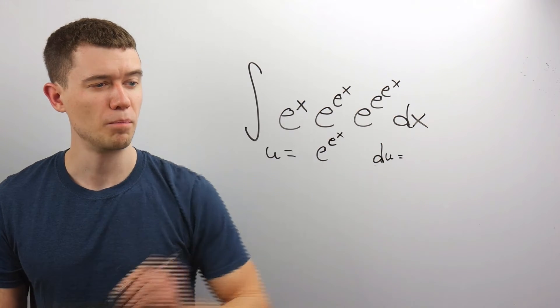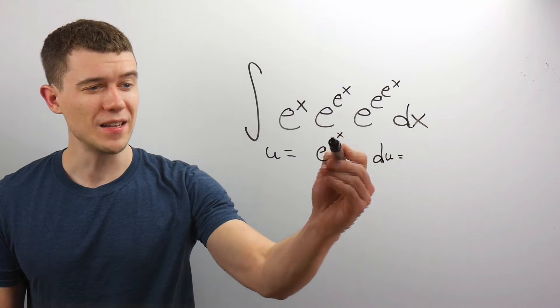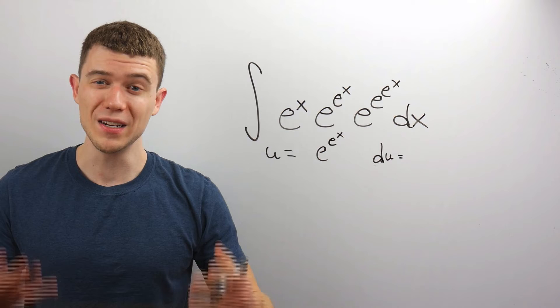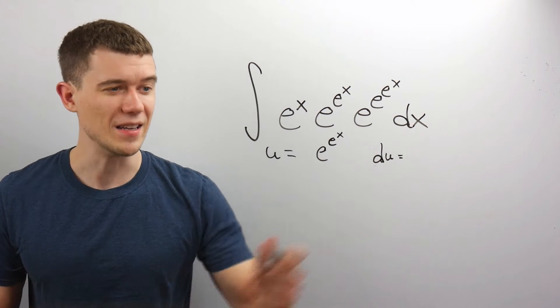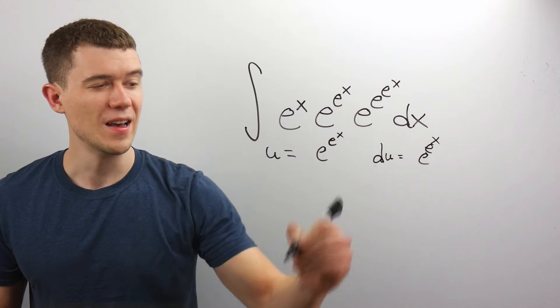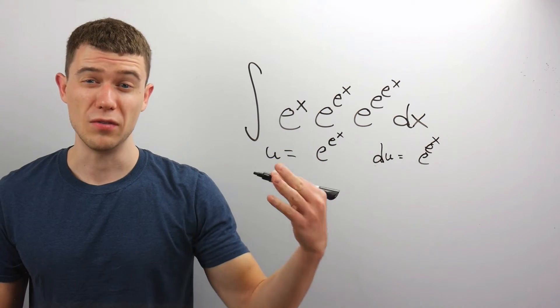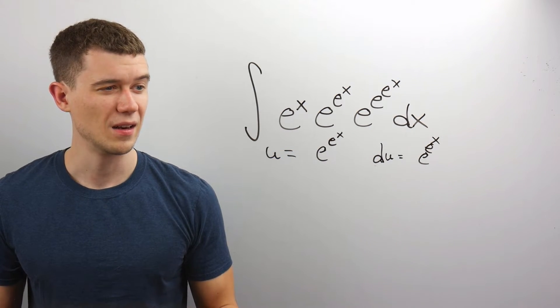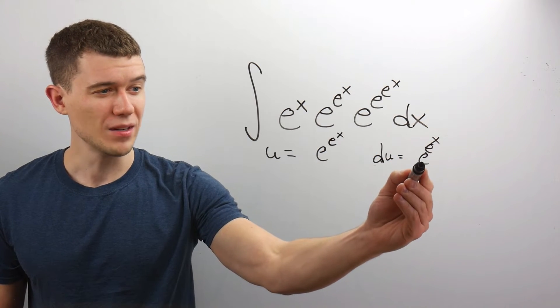I'll need du. The derivative of e^(e^x) — the rule for deriving e is to copy it exactly and then multiply it by the derivative of the exponent. What's the derivative of the exponent?